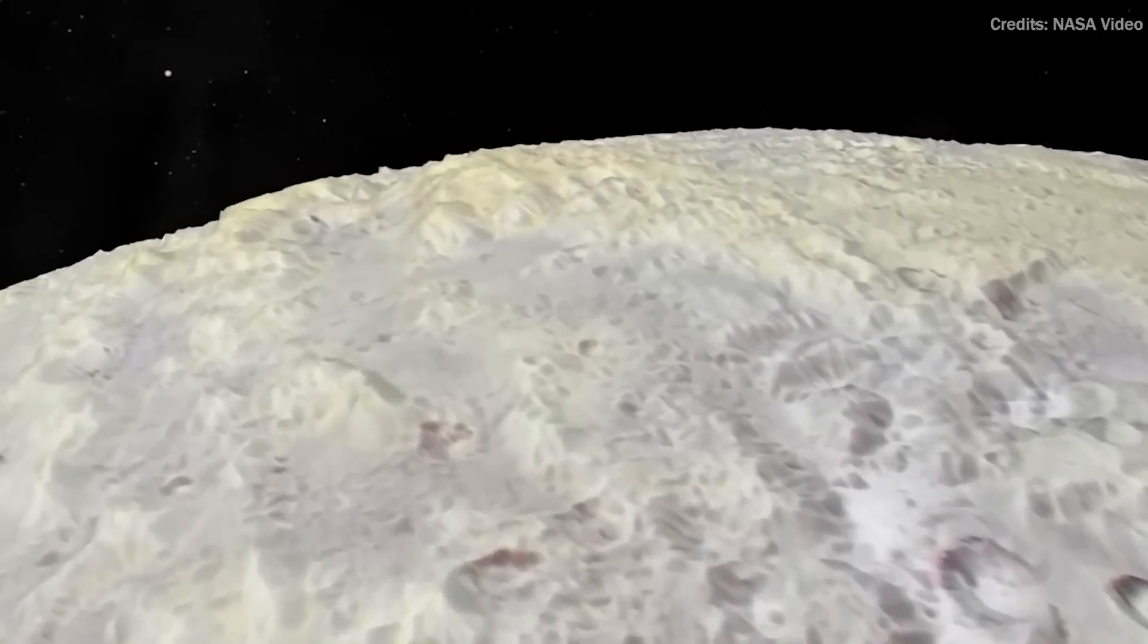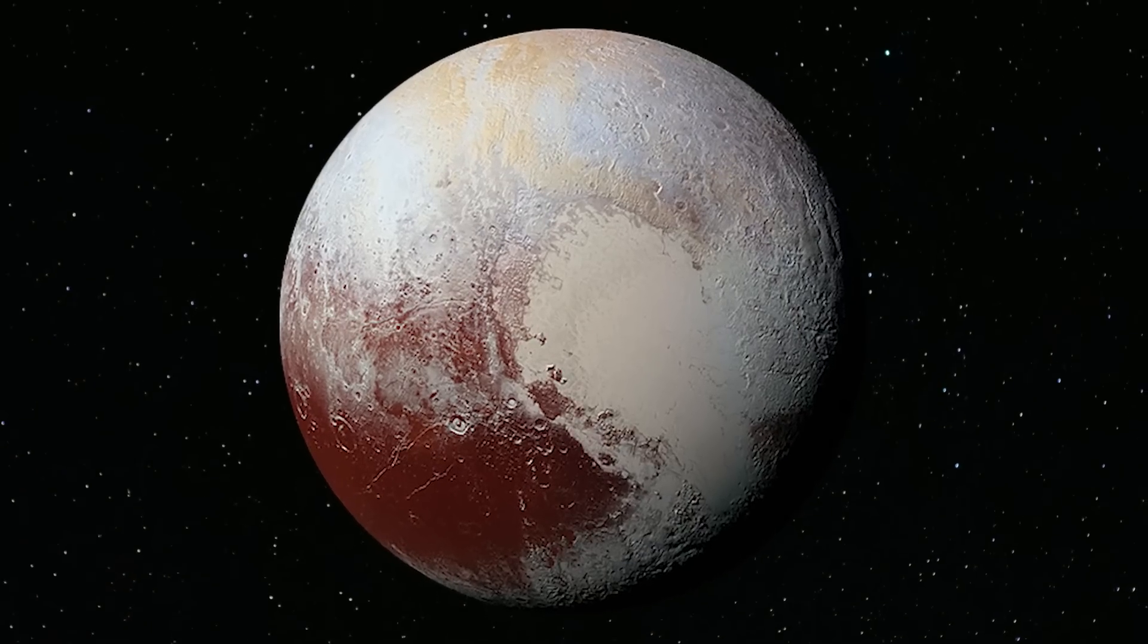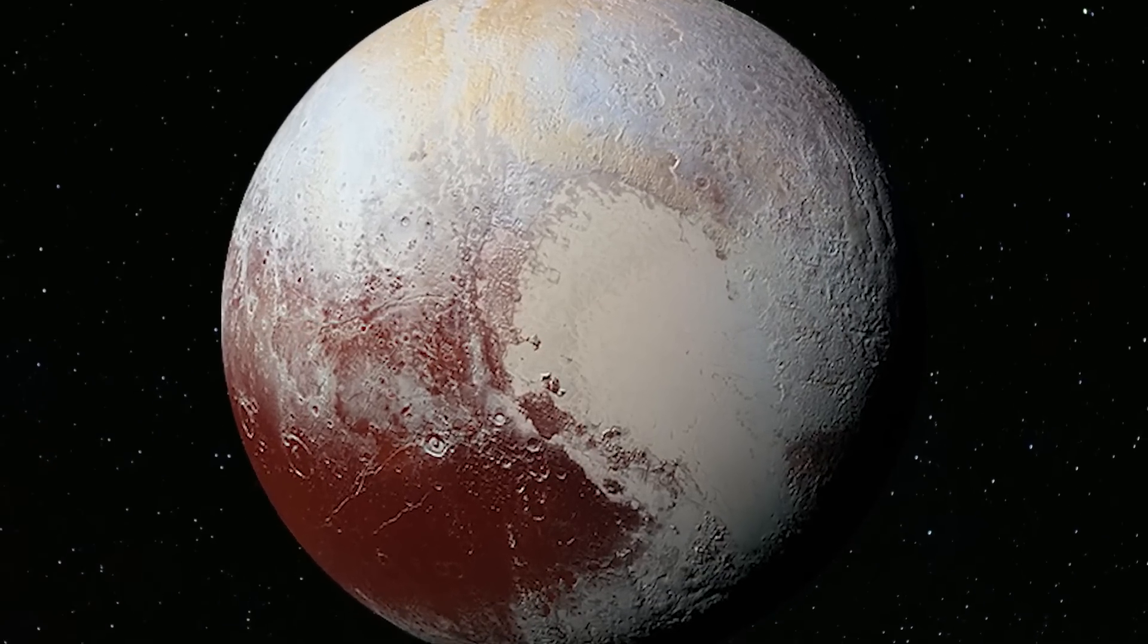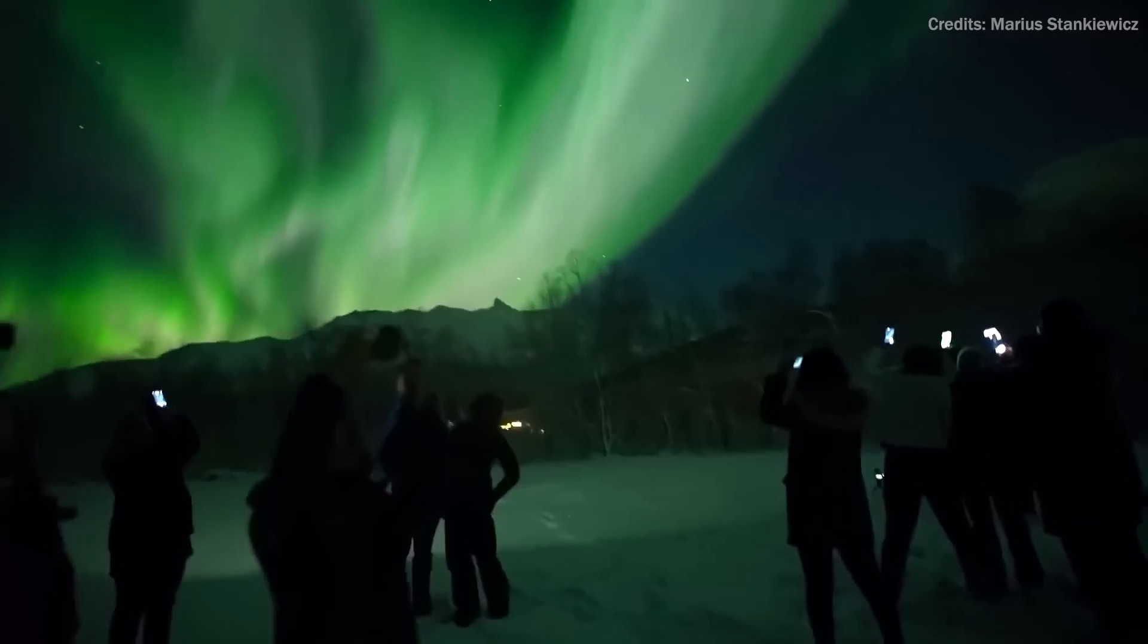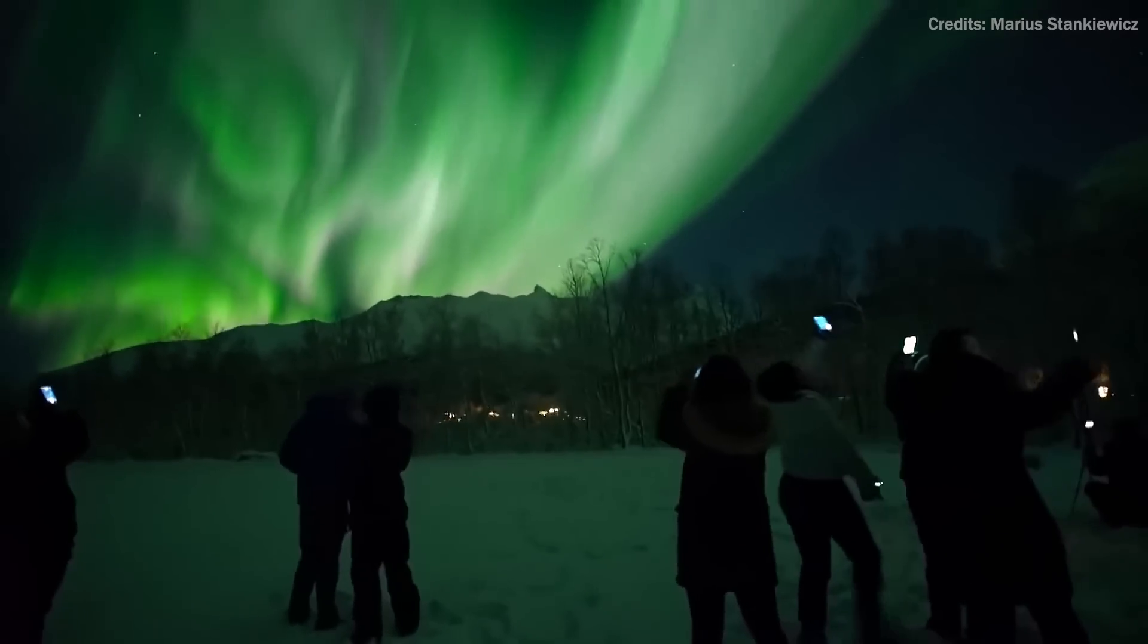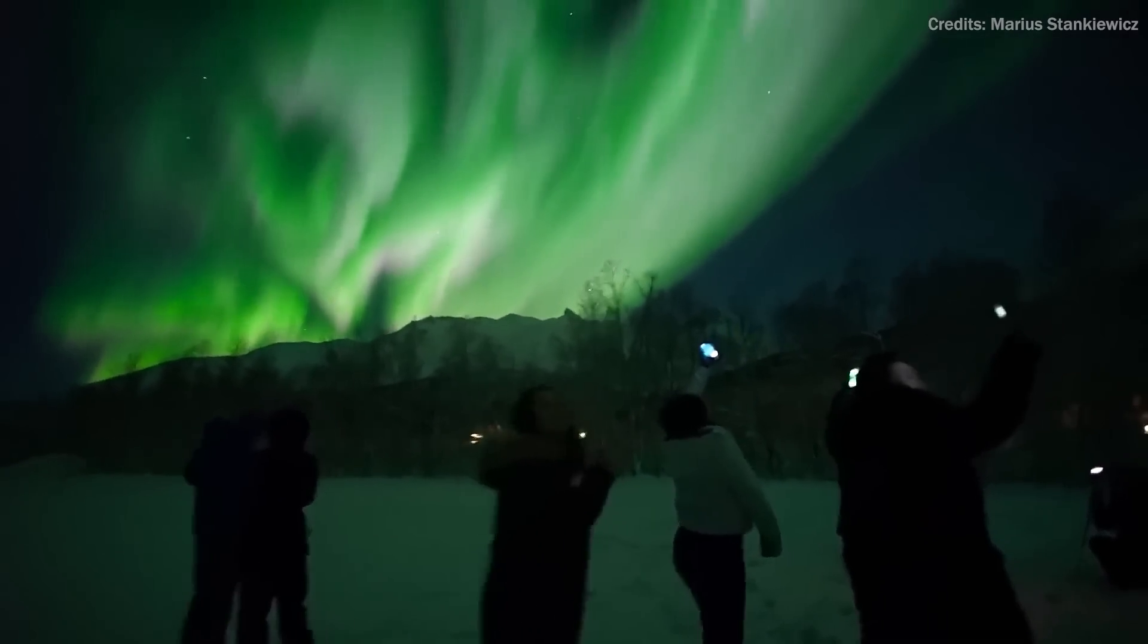And the less shiny the surface of the object is, the larger it must be. If 2003 UB313 reflects 90% of sunlight, the same as a fresh snowfall on Earth, its size would be slightly larger than Pluto.